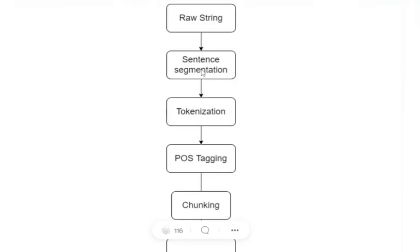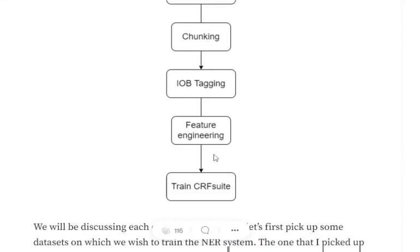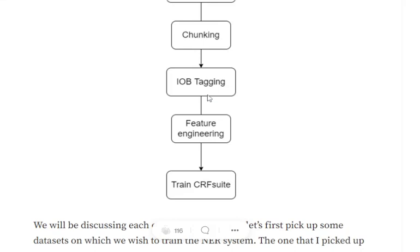The first step is sentence segmentation, followed by tokenization, then POS tagging. The fourth part is chunking. Chunking can be skipped if you already have labels — it is used here to generate labels. I'm assuming you only have raw text, so I will use chunking to generate labels for noun phrases. Next comes IOB tagging, then feature engineering, and finally training the CRF suite.